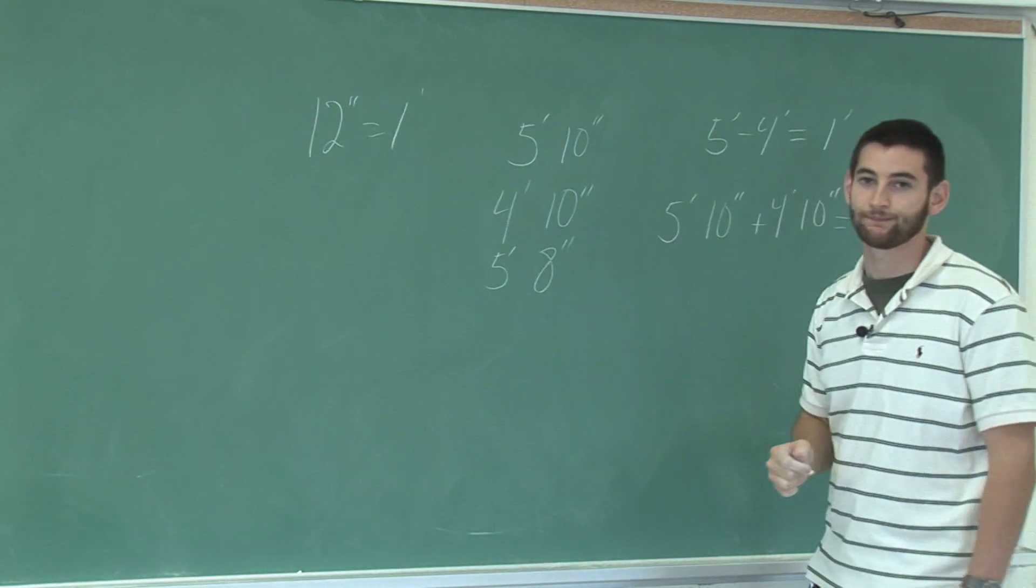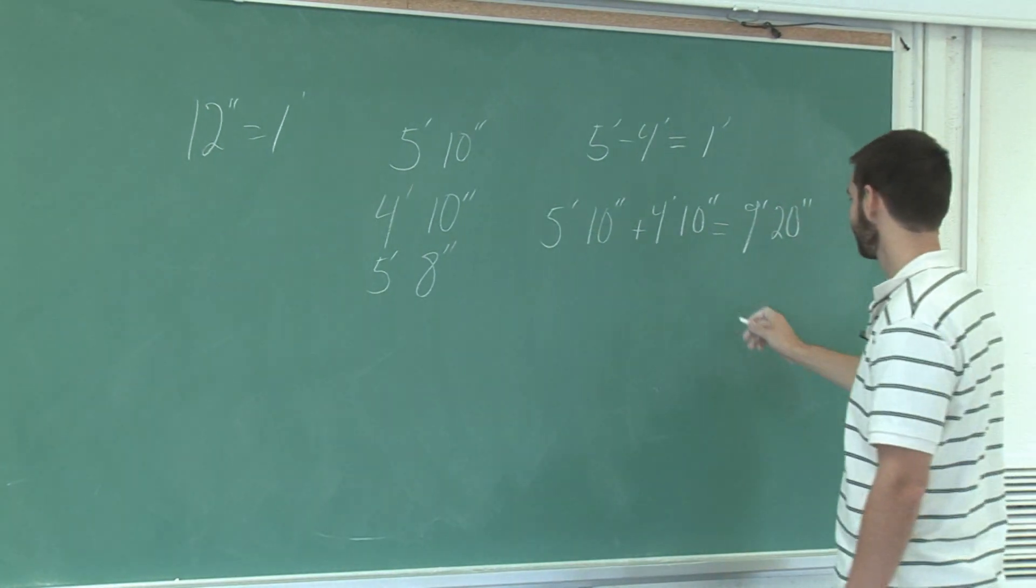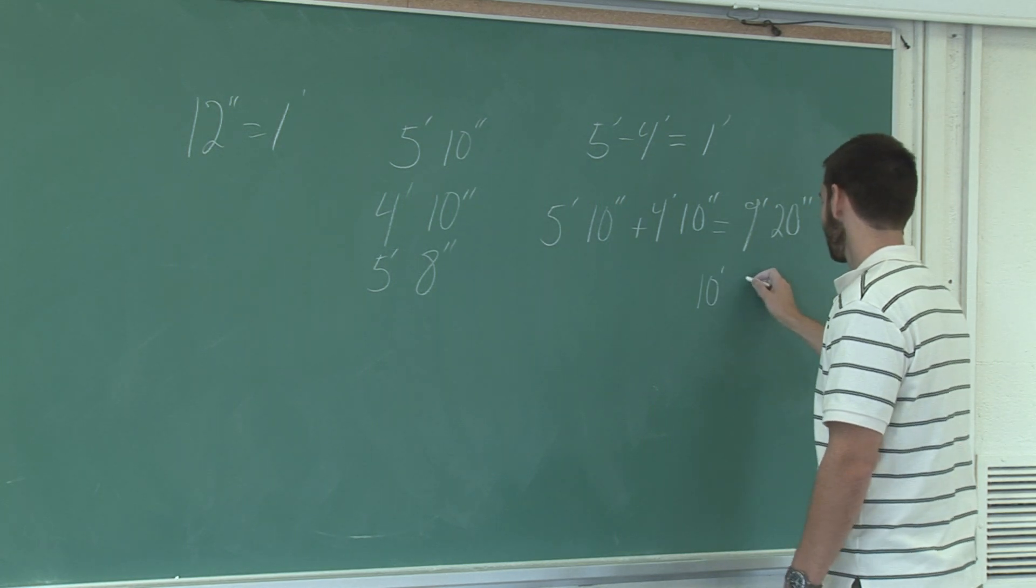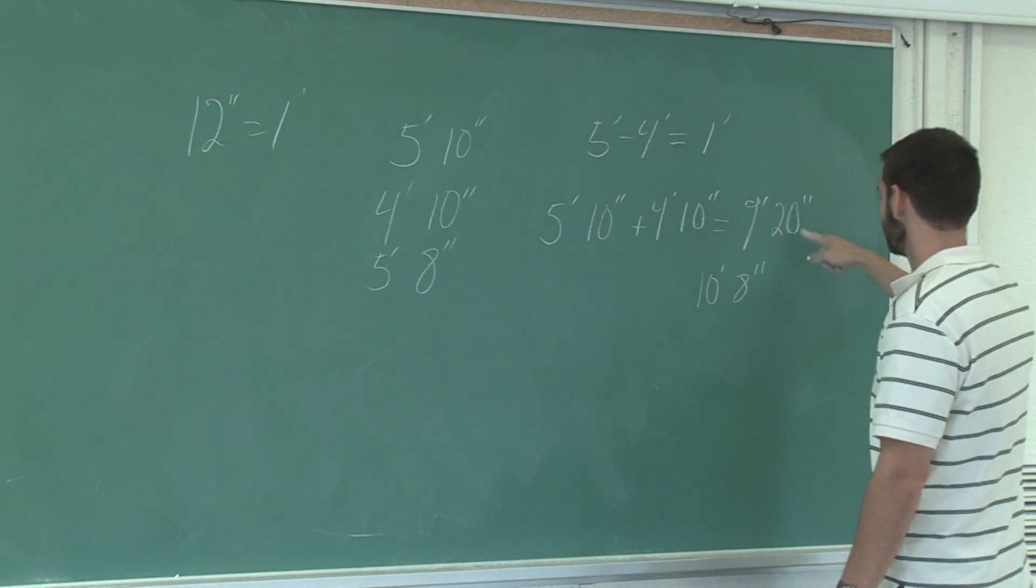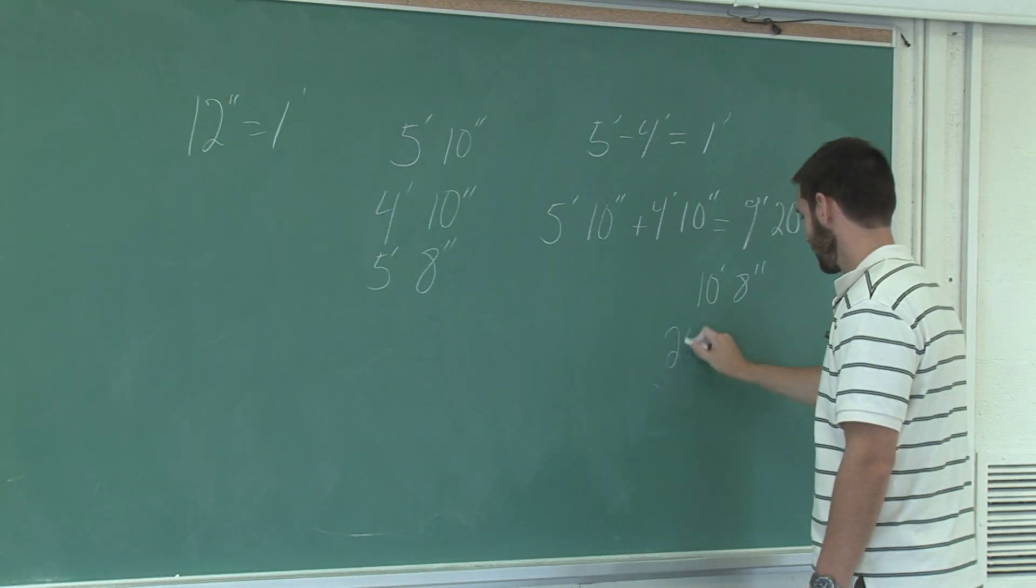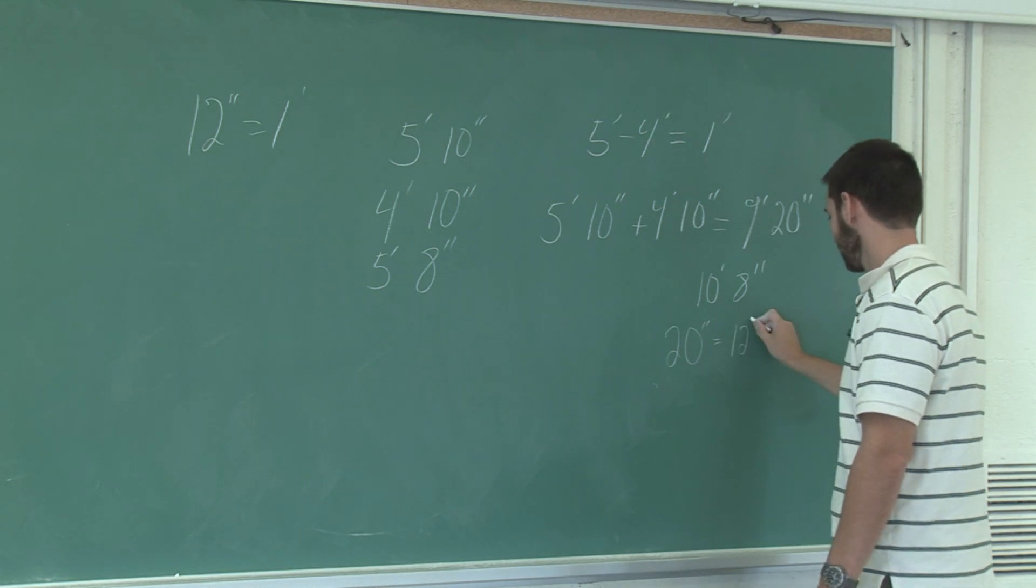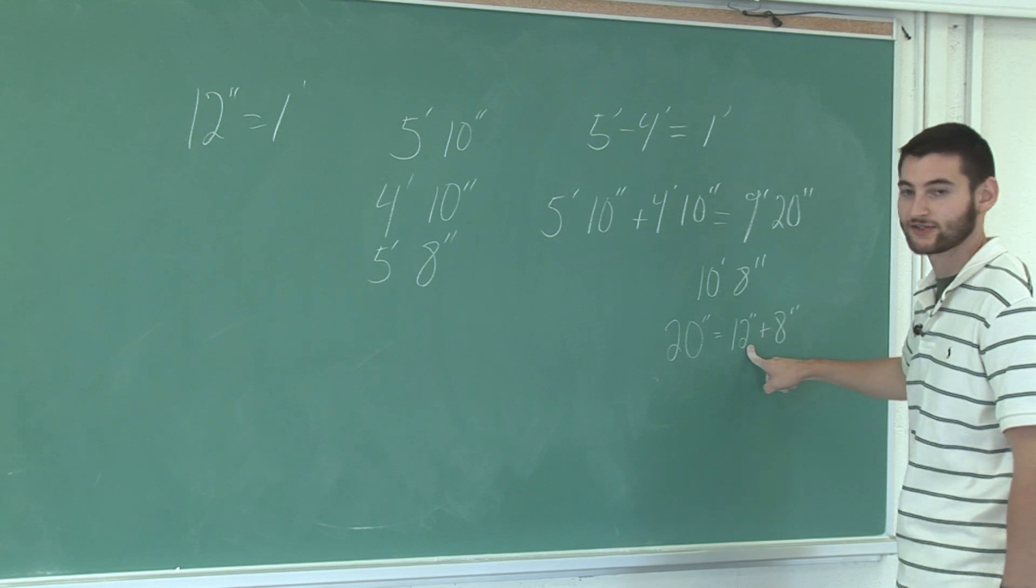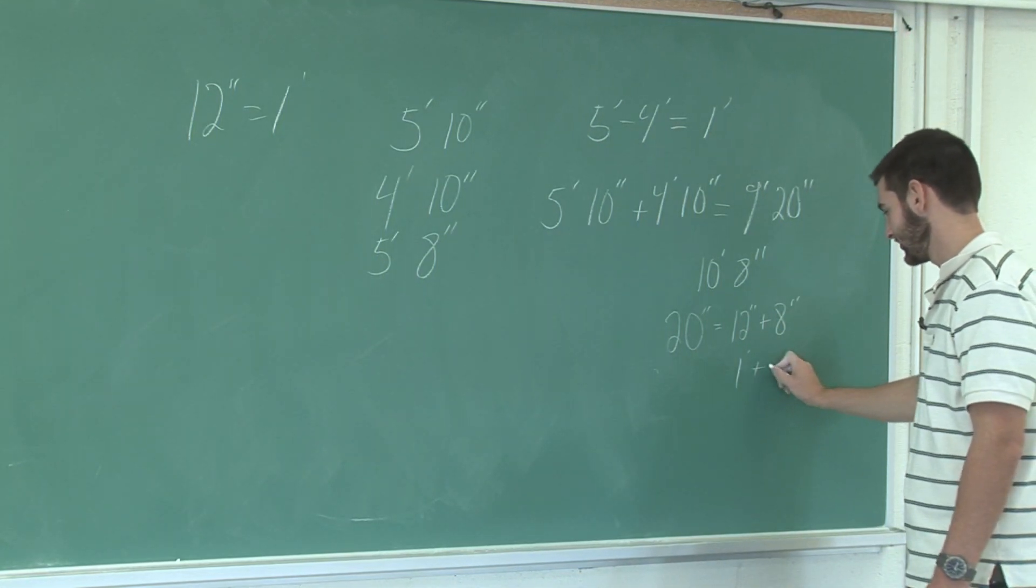Now 20 inches is more than a foot. So we're going to subtract 12 and then add that 12 to the foot. Because 20 inches is equal to 12 inches plus 8 inches. And since 12 inches is a foot, we can write it as such and 8 inches stays the same.